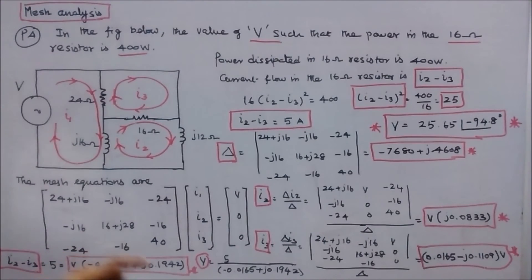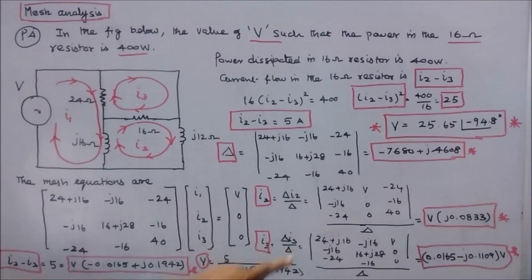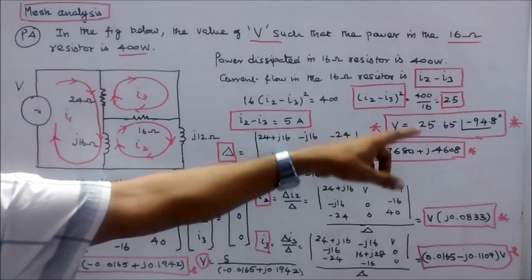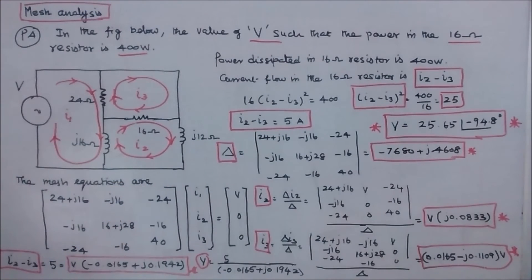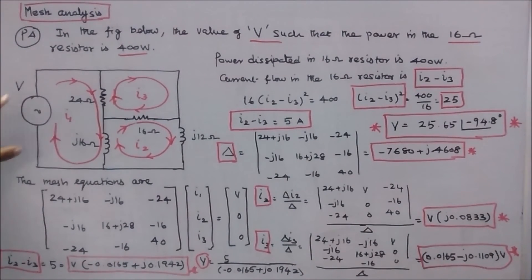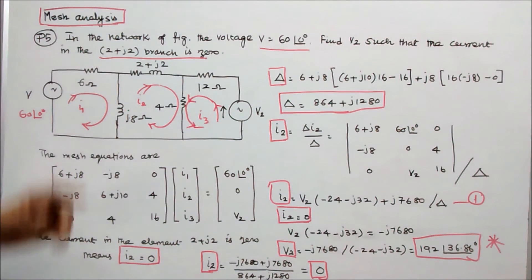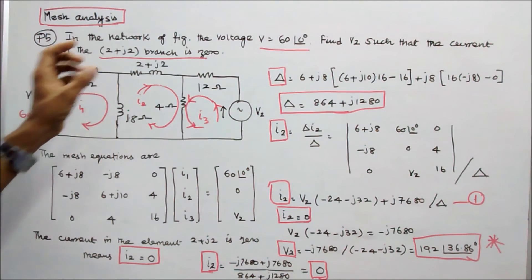Solving for V: V = 5 / (minus 0.0165 + j0.1942) = 25.65 angle minus 94.8 degrees. Therefore, if the source voltage is 25.65 angle minus 94.8 degrees, the power dissipated in the 16 ohm resistor is 400 watts.